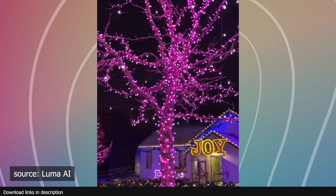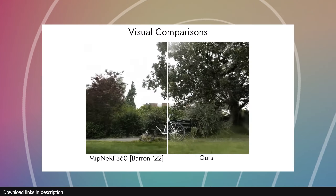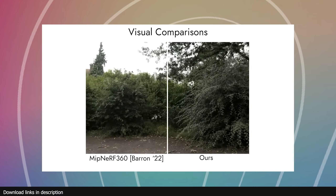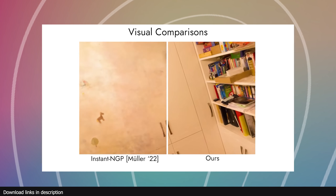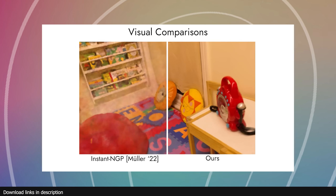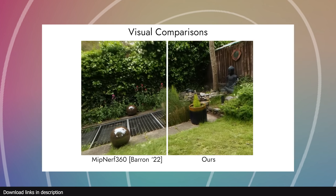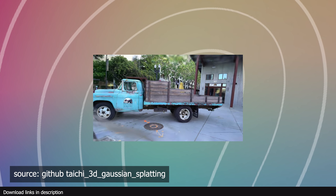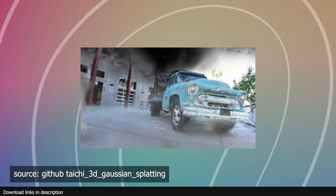Number three: limitless creativity. Whether you are crafting an epic game world, a stunning architecture visualization, or mind-blowing CGI for movies, Gaussian splatting gives you the freedom to push the boundaries of your imagination. It's like a blank canvas with infinite possibilities. Just like photogrammetry, Gaussian splatting can transform a series of images into a fully navigable 3D world, capturing every ounce of materials, shapes, and lighting in the process.